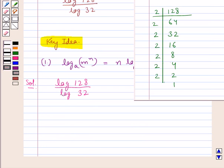As you can see on factorizing 128, we find that 128 is equal to 2 to the power of 7. So we can write this equal to log of 2 to the power 7 upon log of 32.